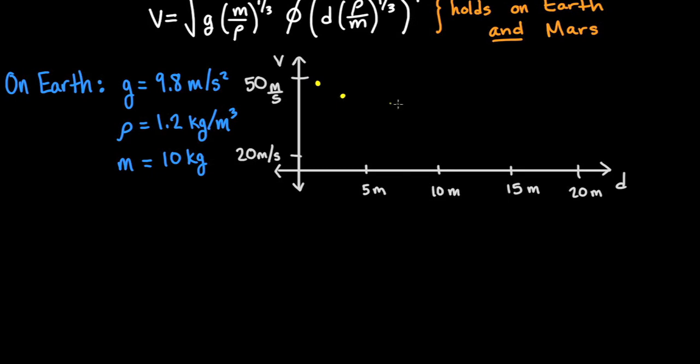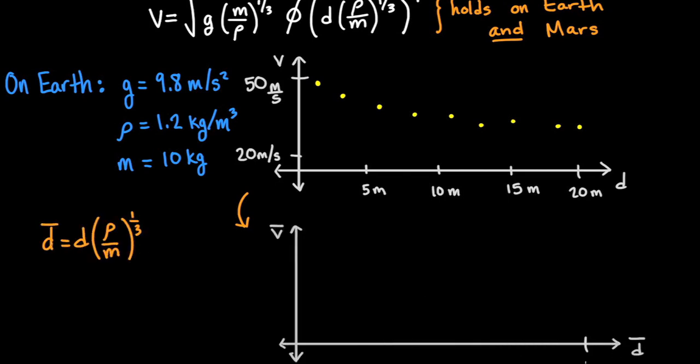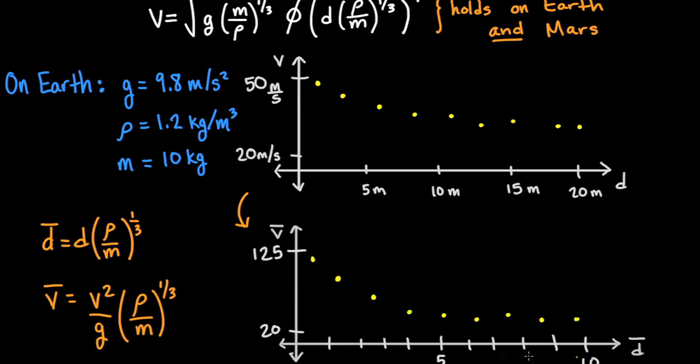For example, suppose we obtain the following data on Earth. Then we could convert this data to the d-bar, v-bar axes by scaling the variables v and d according to the Earth values for the mass, gravity, and atmospheric density. We can fit this data to some best-fit curve, and this best-fit curve is our best approximation to that function phi.